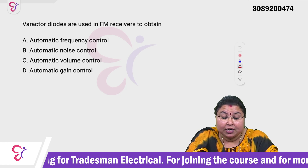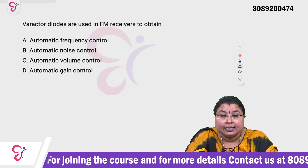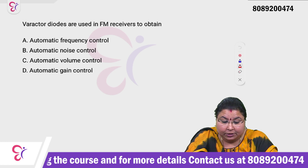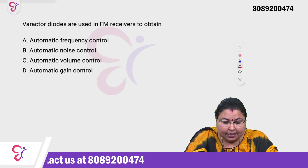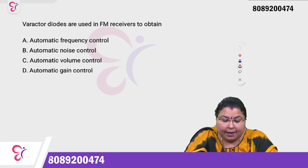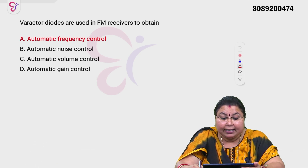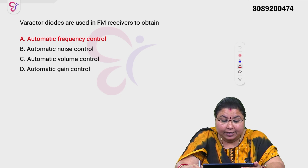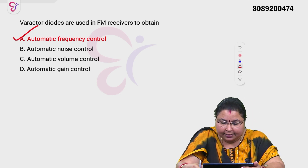Varactor diodes are used in FM receivers to obtain: Option A Automatic Frequency Control, Option B Automatic Noise Control, Option C Automatic Volume Control, Option D Automatic Gain Control. Varactor diodes are used in FM receivers to obtain Automatic Frequency Control — Option A is the correct answer.